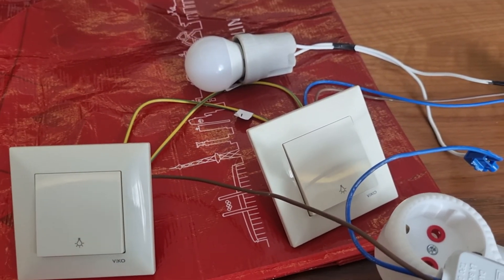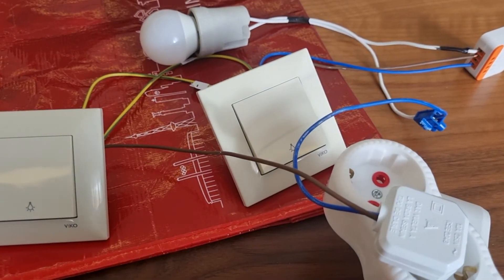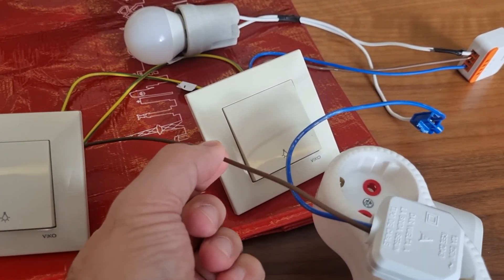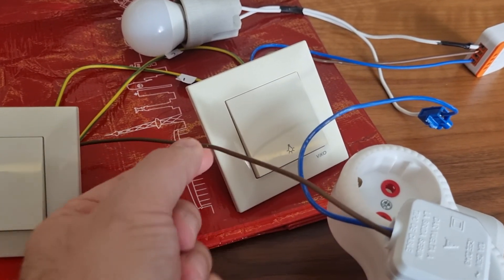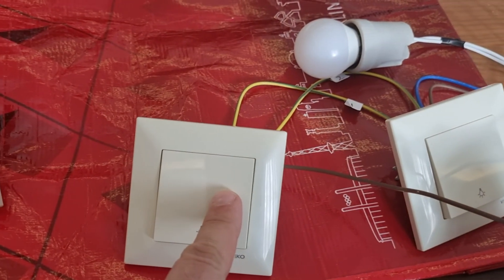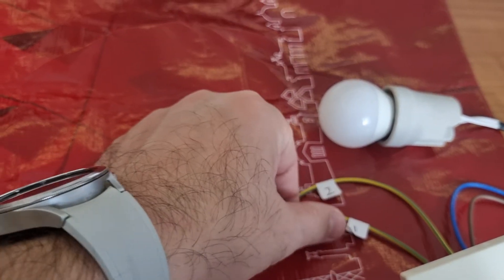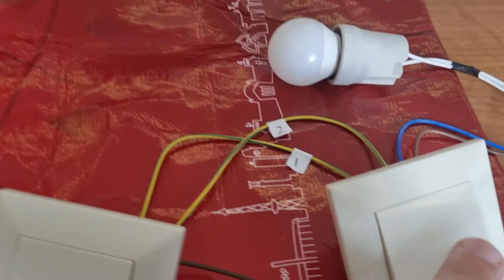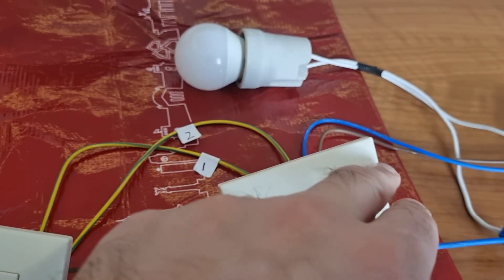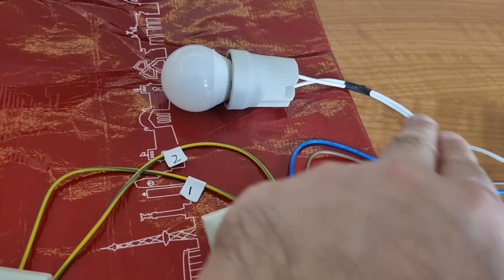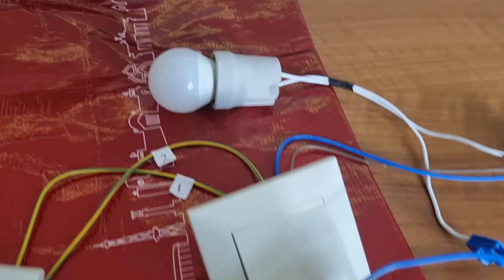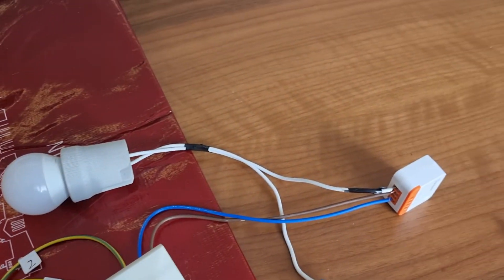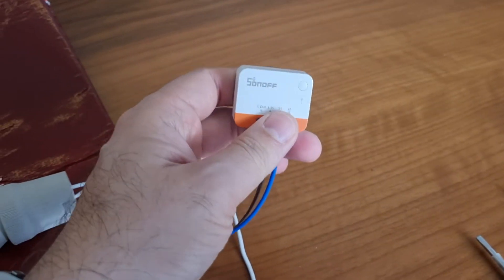Now, the way the system works in Turkey and European countries is quite different than North America. The way a normal two-way system works is you've got the line, which is faz (the color of your line or hot), that comes into this switch. Usually you've got one and two connected to the other switch, and from the other switch the hot or the line is connected to the bulb. Then you've got the neutral that is connected to the bulb.